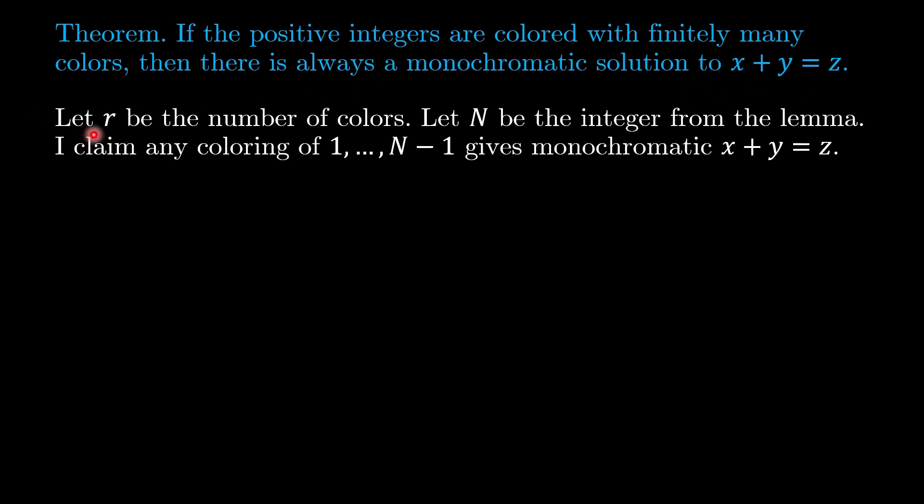So we let r be the number of colors. And we let N be the integer from the previous lemma. I claim that actually we don't have to look at the whole string of positive integers. In fact, if we look at any coloring of 1 to N minus 1, I will always be able to find a monochromatic solution to x plus y equals z.